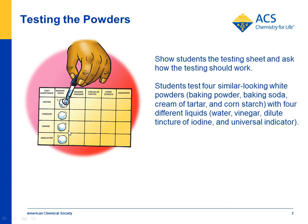They get a set of reactions for baking soda, a set for baking powder, and so forth with cream of tartar, cornstarch, and the unknown. Then the idea is that they look at the set of reactions and determine which one matches up with the set of reactions of the unknown.